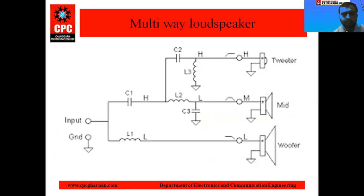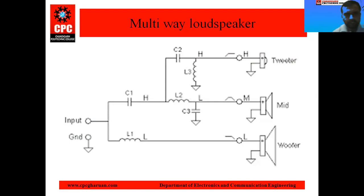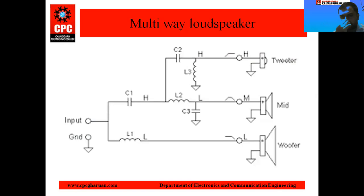Next is the multi-way speaker. In a multi-way speaker, three speakers are used: tweeter, midrange, and woofer. In the tweeter, a capacitor is used; in the midrange, a resistor and inductor are used; and in the woofer, only an inductor is used. The function of the capacitor is to pass high frequency signals and block low frequency signals. So the tweeter handles high frequency signals, the midrange handles audio frequency signals, and the woofer handles low frequency signals. For bass signals, the woofer is used, and for high frequency signals, the tweeter is used. Audio frequency signals are obtained by the midrange loudspeaker. In local radios or televisions, midrange speakers are used, which are very good in the audible frequency range.